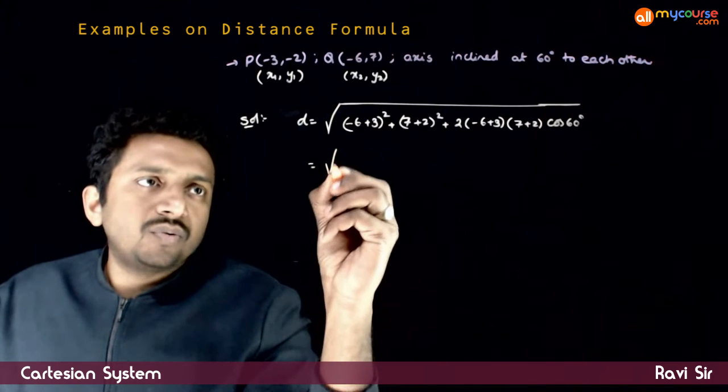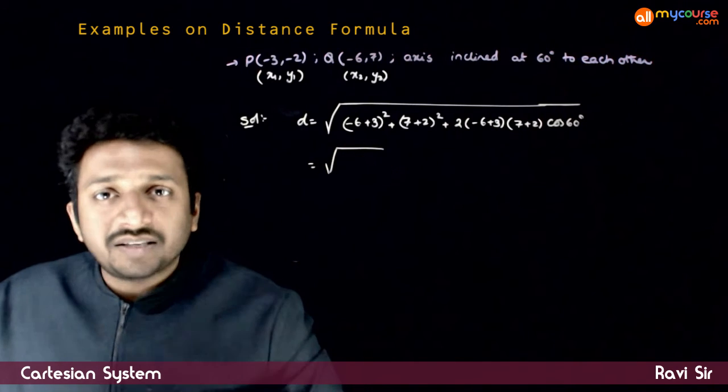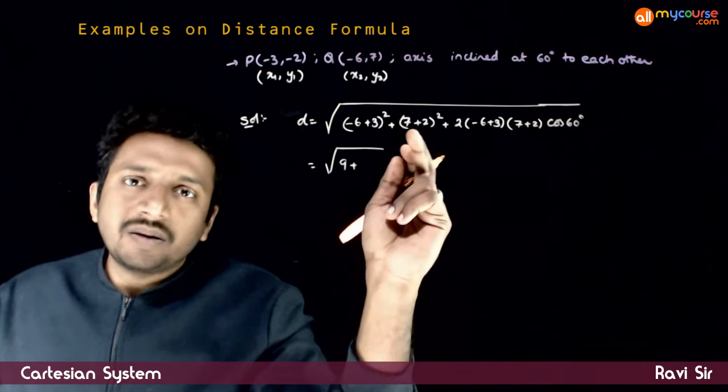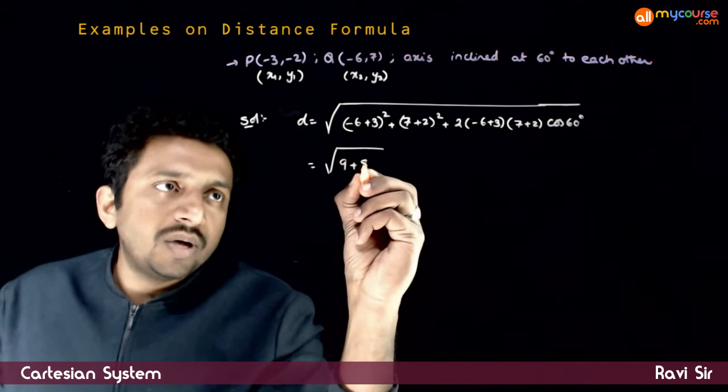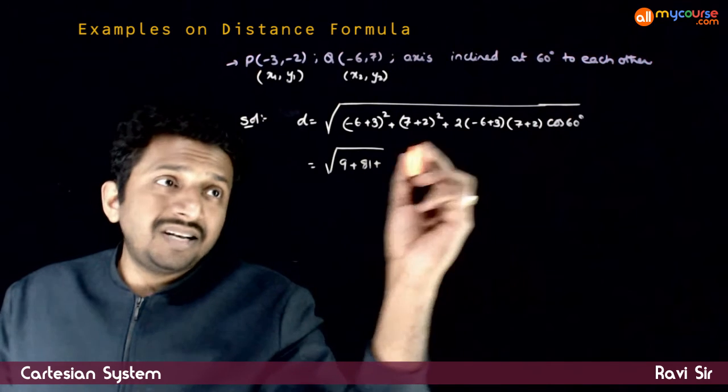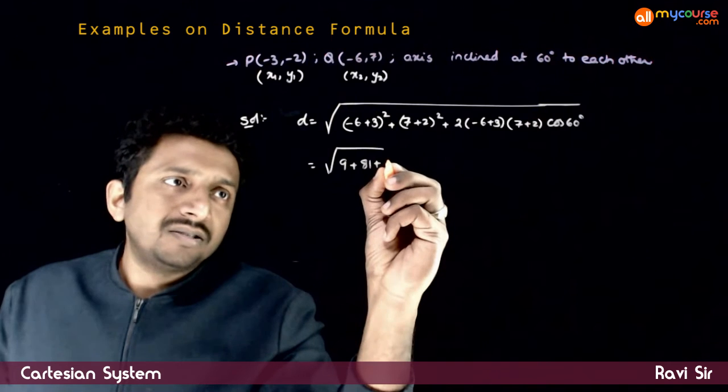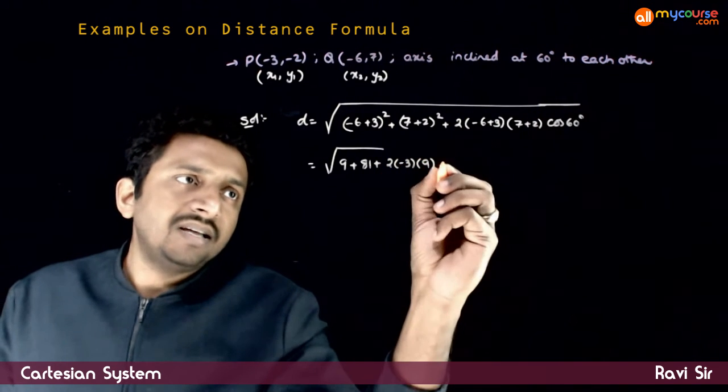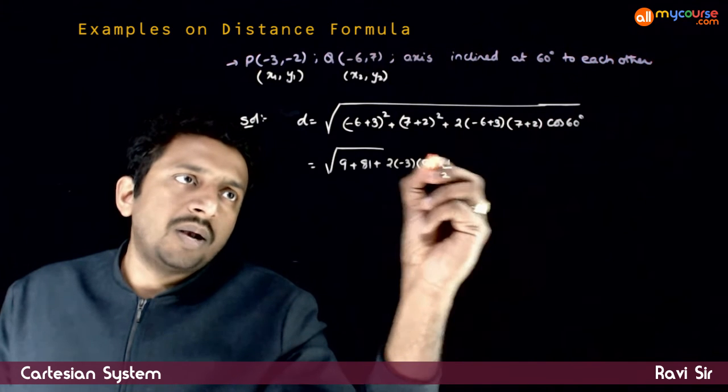That equals square root of: minus 6 plus 3 is minus 3, whole square is 9, plus 7 plus 2 is 9, 9 squared is 81, plus 2 times minus 3 times 9. Cos 60 is 1 by 2.